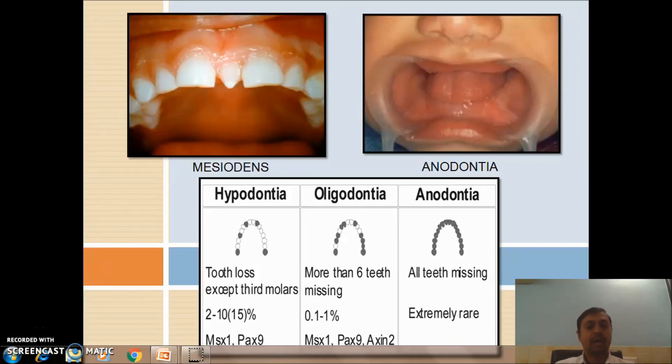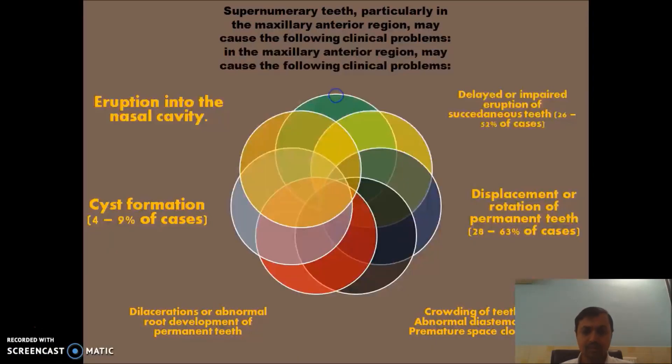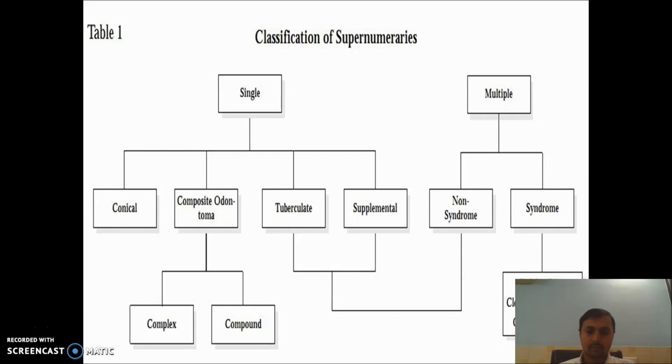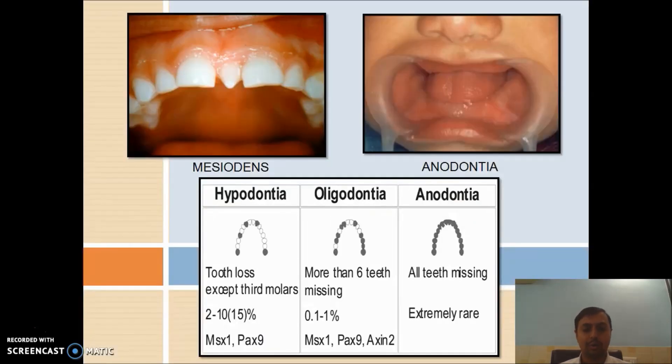What is anodontia? The absence of teeth. It can be hypodontia, oligodontia, or anodontia. Nowadays, hypodontia and oligodontia are used interchangeably. But if more than six teeth are missing, we call it as oligodontia.